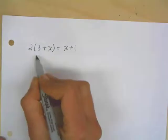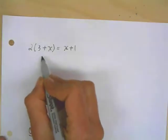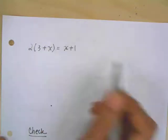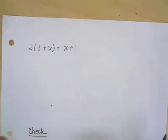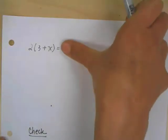So let's look at another problem here. Here we have 2 times the quantity 3 plus x equals x plus 1. Once again, you can hit the pause button and go through the steps and then check and see how I'm doing it.